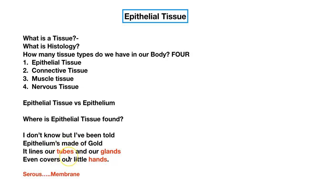Epithelial tissue lines our tubes. If it is a gland — sweat gland, oil gland, adrenal gland, pituitary gland, thyroid gland — if it ends in 'gland,' it is epithelial tissue. And it covers our skin. The prefix 'epi' means on top of, covering. So our skin is epithelial tissue.